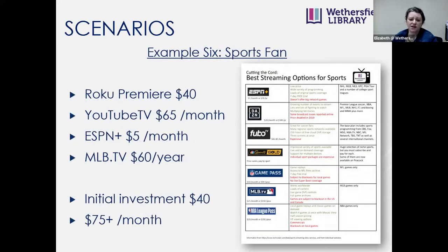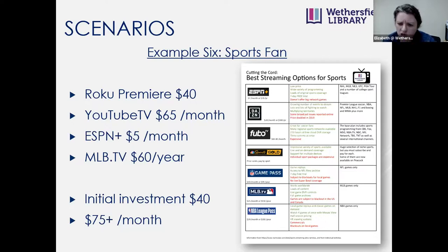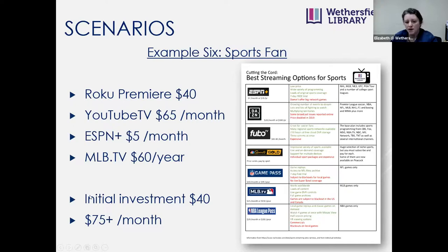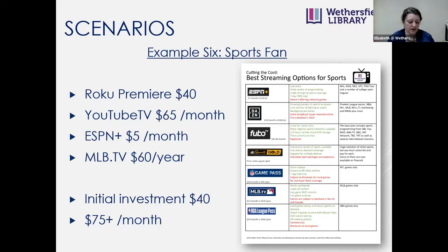Example 6 — sports fan: Roku Premiere ($40), YouTube TV ($65/month), ESPN Plus ($7/month), MLB.tv ($130/year) — initial $40, then $75 to $100+ per month. Sports is another scenario where cord cutting may not save money over cable. It's all about the math that makes sense for you. Check the sports options handout for the best streaming options if you're a sports fan.